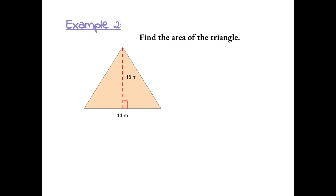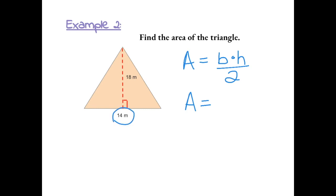Example 2: Find the area of the triangle. Area equals base times height divided by 2. The base of this triangle is 14 and the height is 18, because that's our perpendicular height. First we have to do 14 times 18.